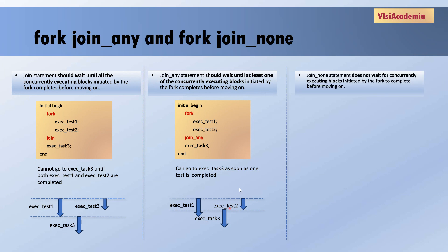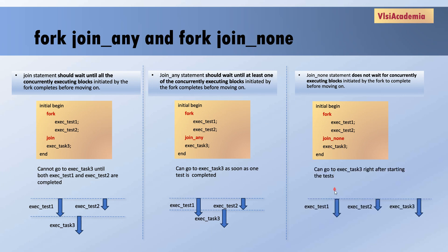There is one more construct called join none. In join none, it does not wait for the concurrently executed blocks to complete before moving on. Using join none instead of join any, task three can be started right after test one and test two are initiated. In this case, task three can also run in parallel with test one and test two. These are the differences between join, join any, and join none.